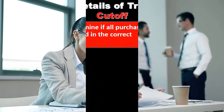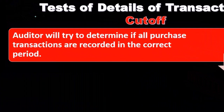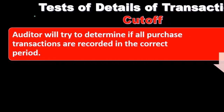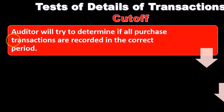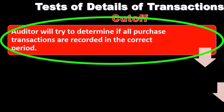Next we have the assertion related to the test of details for cutoff. Recall that cutoff typically relates to year-end — whether things are properly recorded in the proper time period. The auditor will try to determine if all purchases are recorded in the correct period.